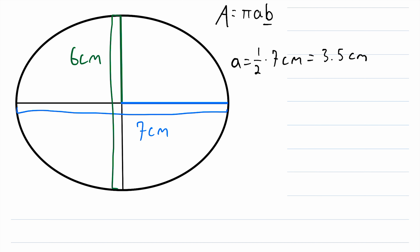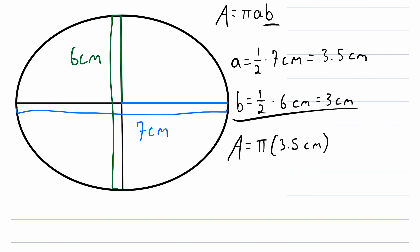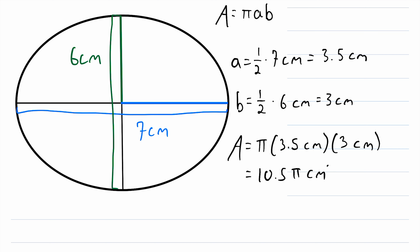And then B, the length of the semi-minor axis, is half the length of the minor axis, which is half of 6 centimeters. So B equals one-half times 6 centimeters, which is 3 centimeters. So the area of this ellipse is equal to pi multiplied by A, which is 3.5 centimeters, multiplied by B, which is 3 centimeters. 3.5 times 3 is 10.5, so this is equal to 10.5 pi centimeters squared.